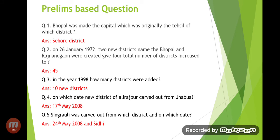Now the prelims-based questions on this topic. First question: Bhopal was made the capital — it was originally the seat of which district? The answer is Sihore district. On 26th January 1972, two new districts named Bhopal and Rajnandgaon were created, bringing the total number of districts to 45.